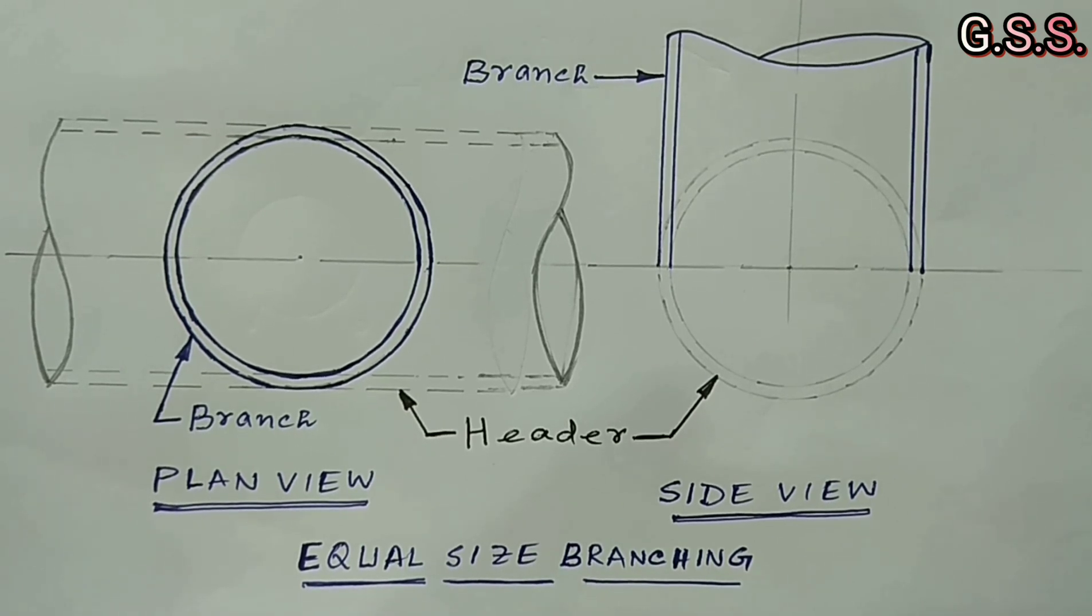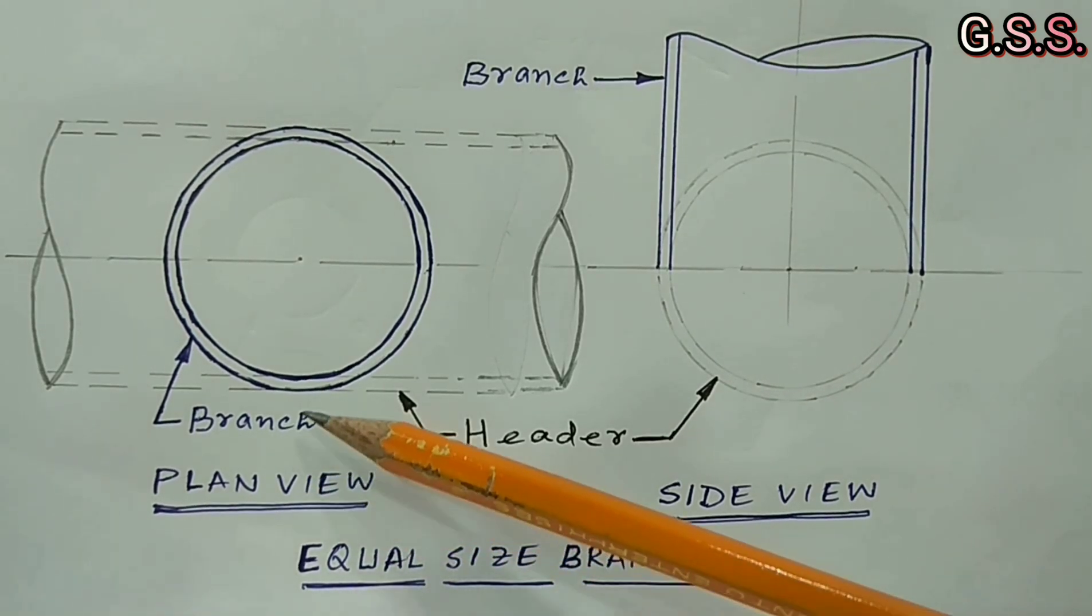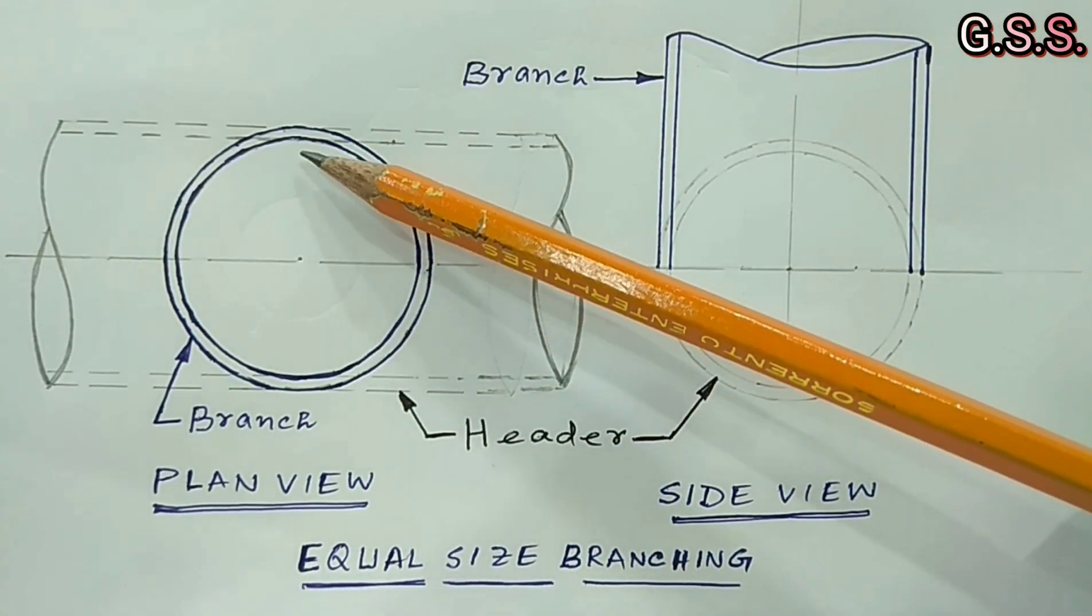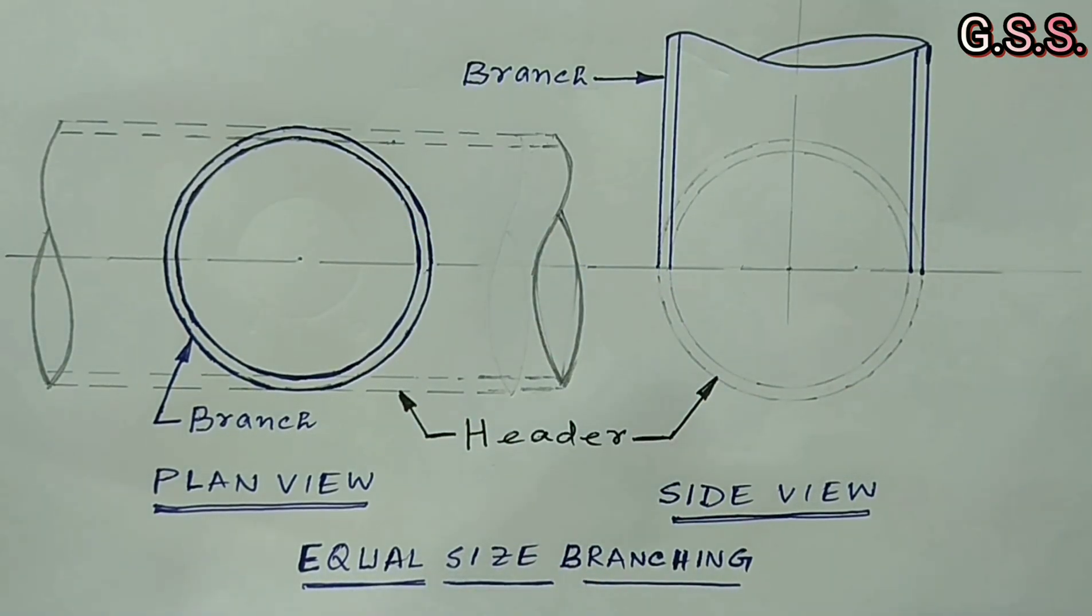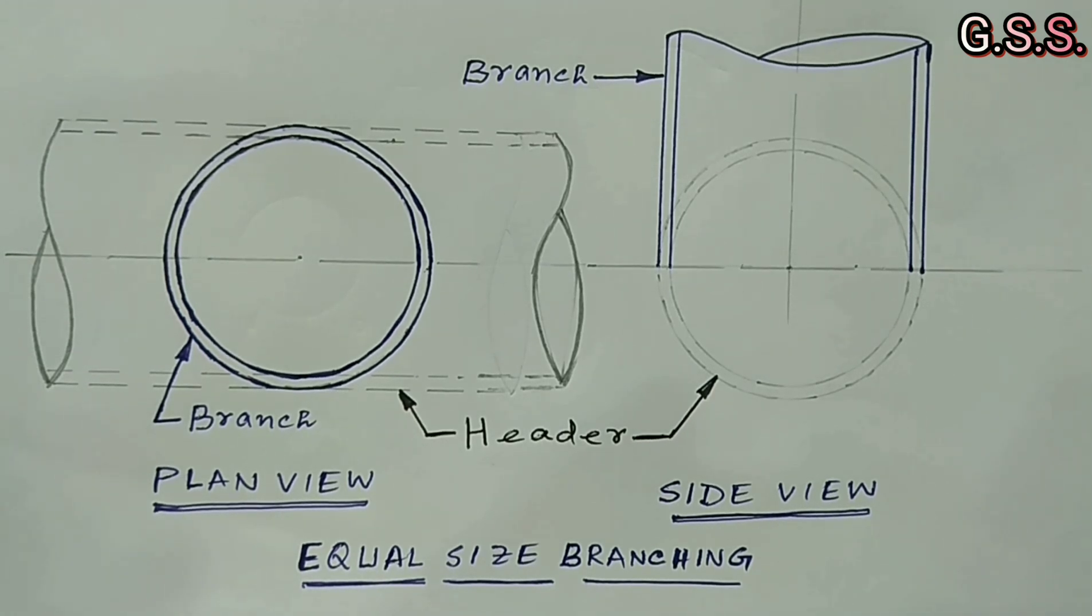For equal size branching, it is not possible to provide RF pad because branch connection is up to OD of header. So, for equal branching, we have to go for direct branching without RF pad or we will have to provide a BART weld and T.